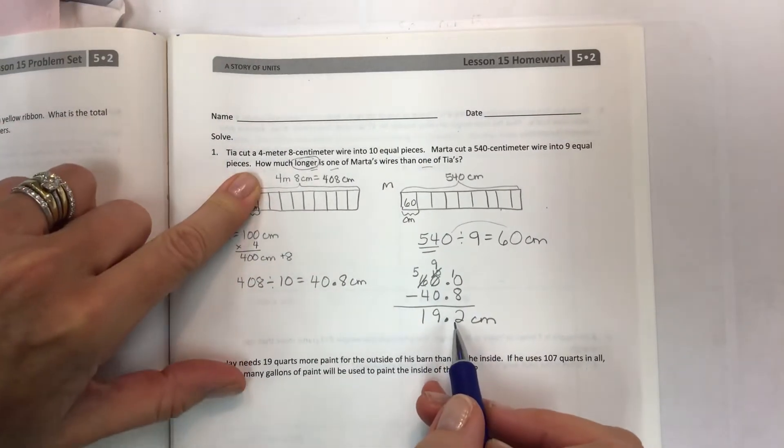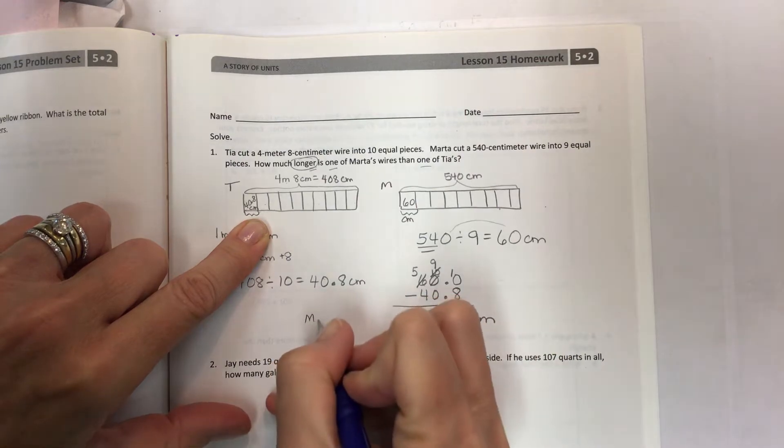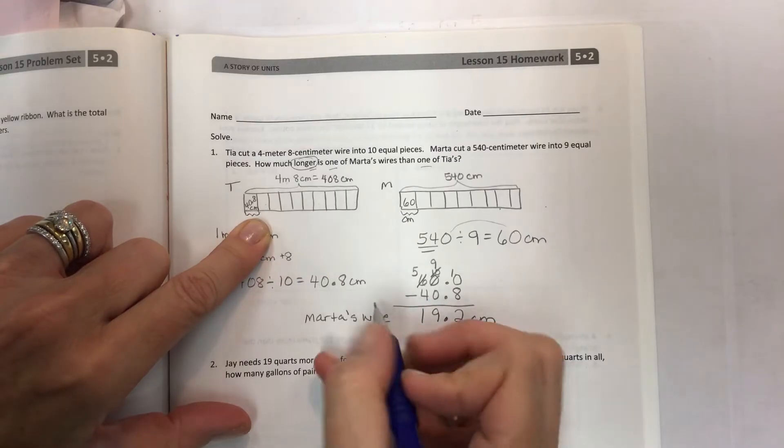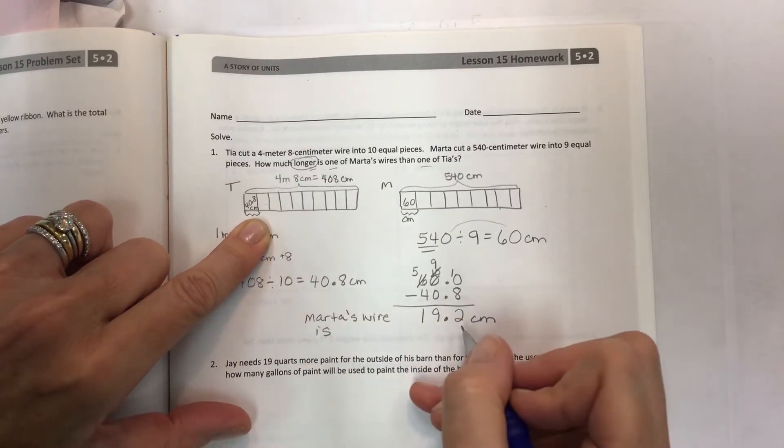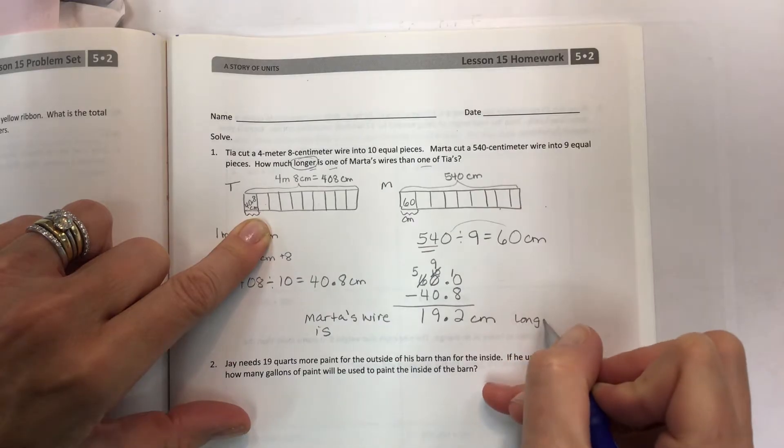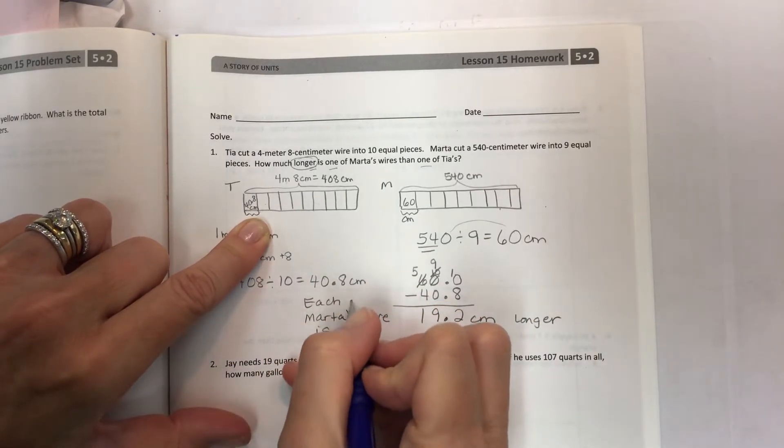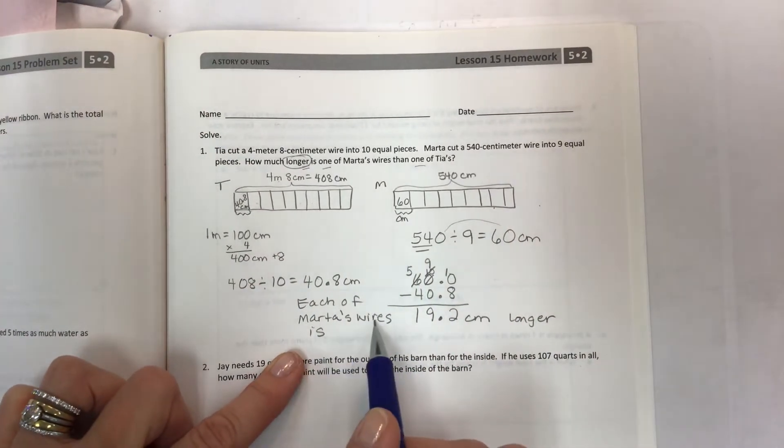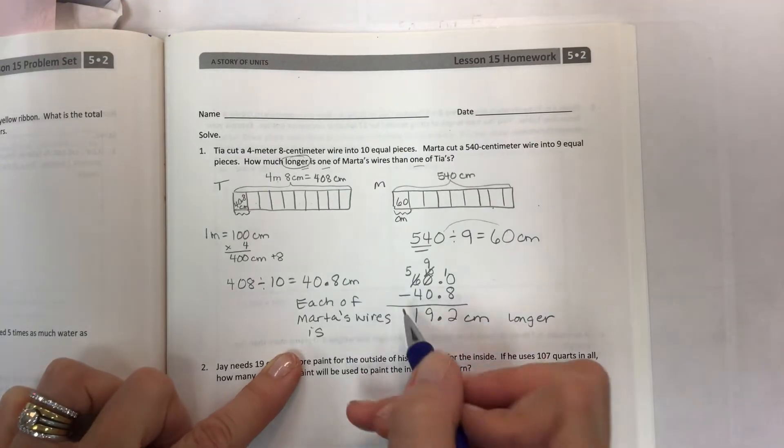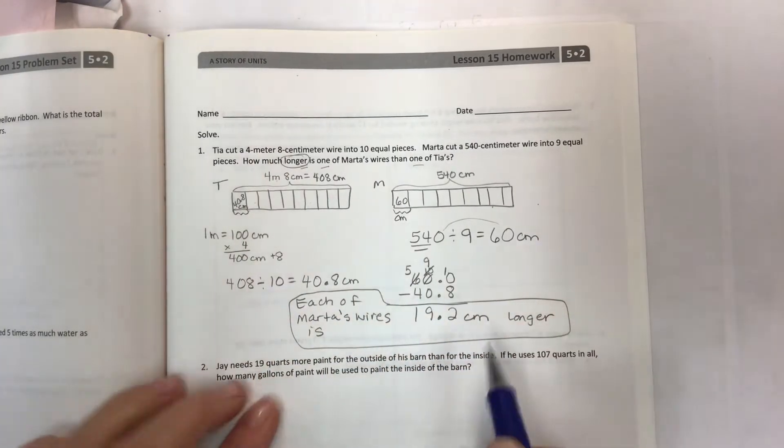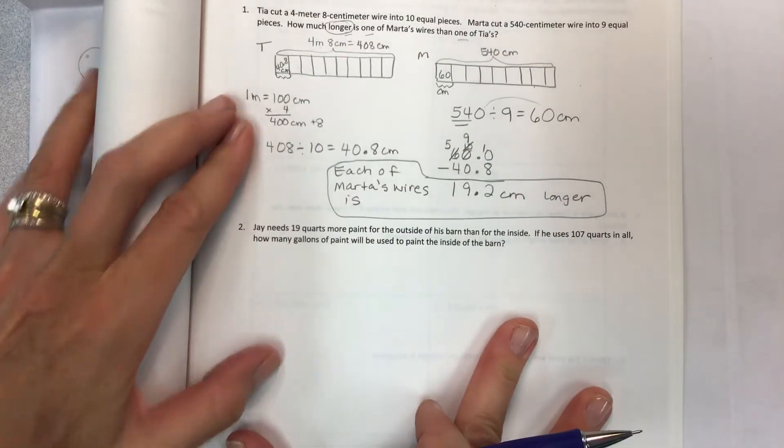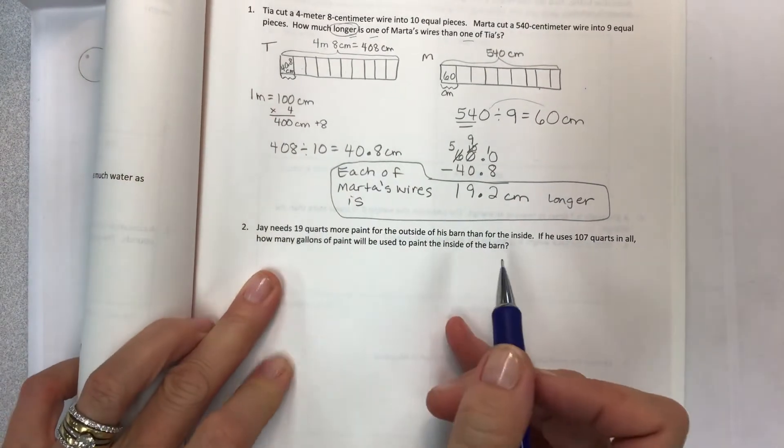And so the difference between one of these and one of these is 19 and 2 tenths centimeters. So we have to label Marta's wire is 19 and 2 tenths centimeters longer. And I need to say each. Each of Marta's wires is. Not are. Each of Marta's wires is 19 and 2 tenths centimeters longer. So there you go. Kind of challenging with those tape diagrams. But they can really help you see what's happening. Let's do another one.